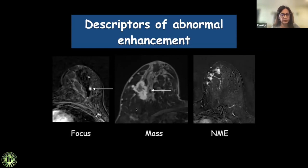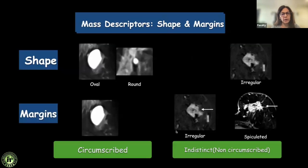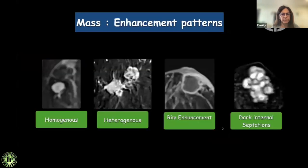A focus is any lesion less than 5mm where you cannot define the morphology. A mass, on the other hand, has convex margins and can be seen in all planes, including the pre-contrast scan. Anything which is not a focus or a mass is a non-mass enhancement. For a mass, we describe the shape — oval, round, or irregular — and the margins, which can be circumscribed or non-circumscribed, the latter further divided into irregular or spiculated, just like mammography.